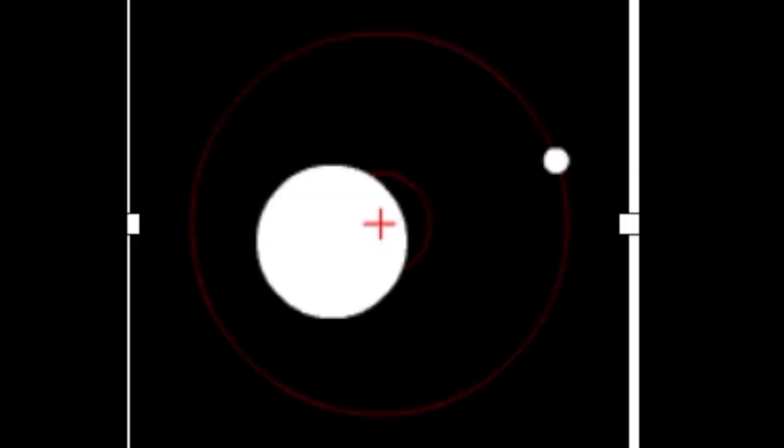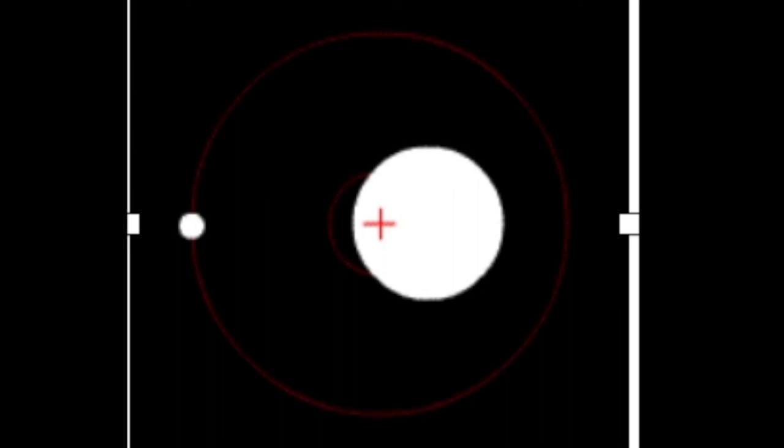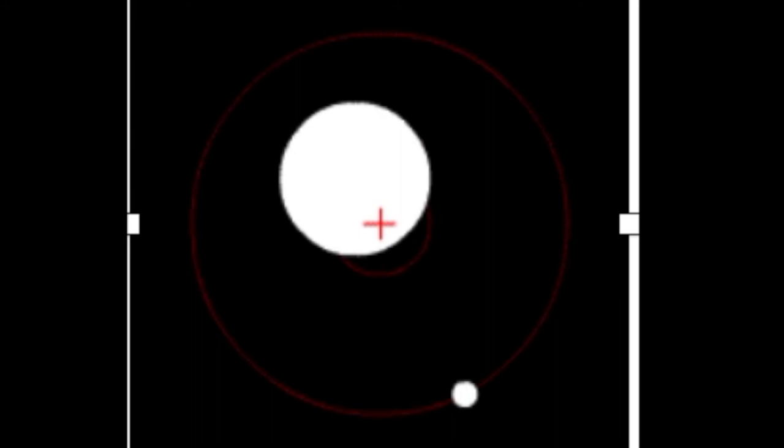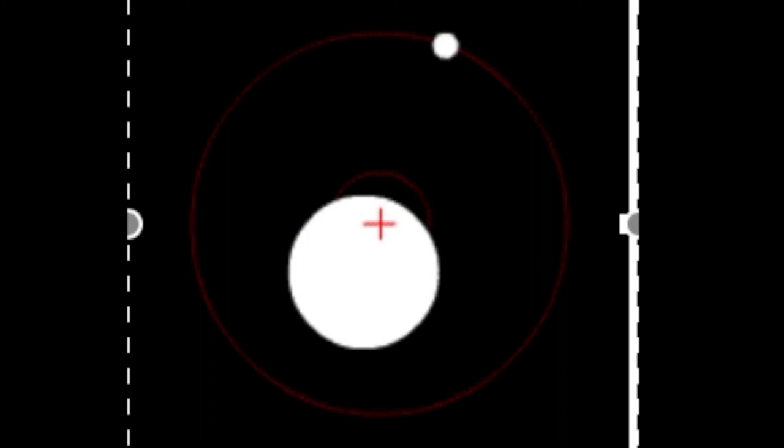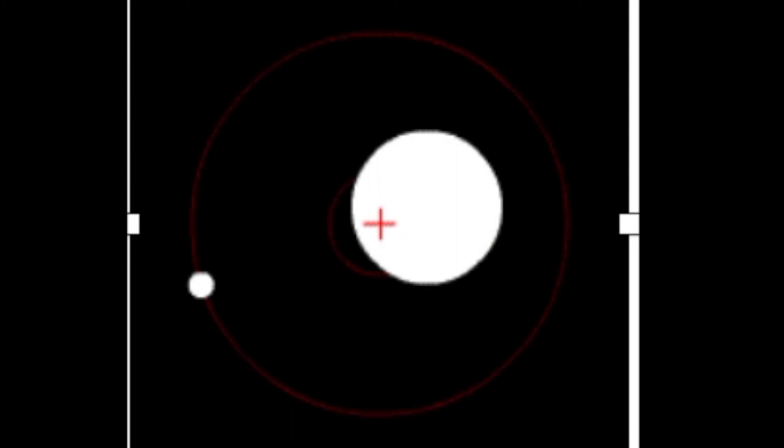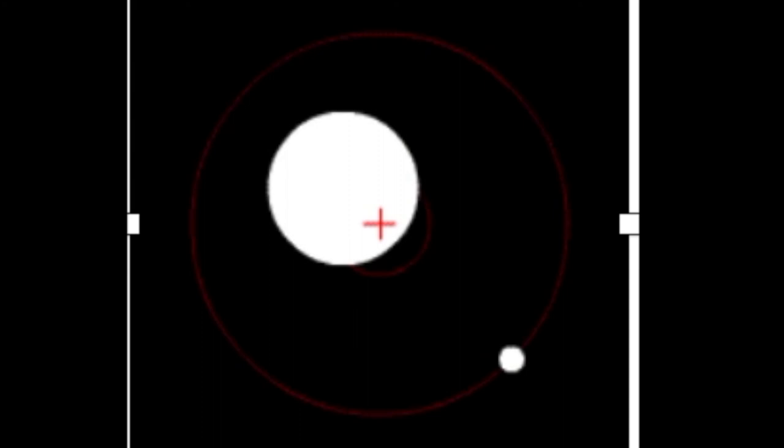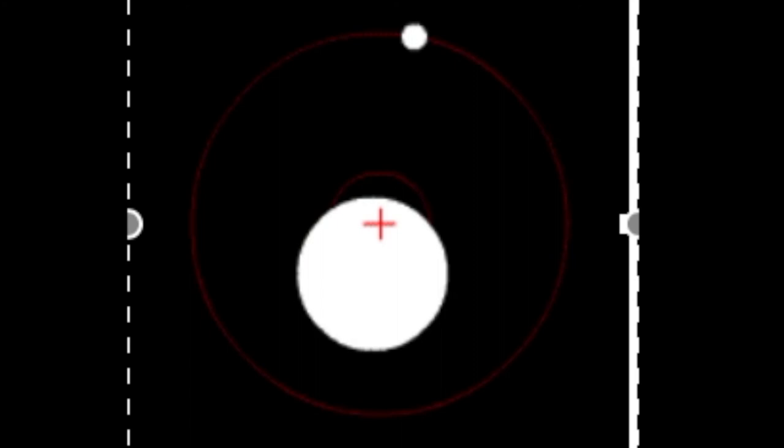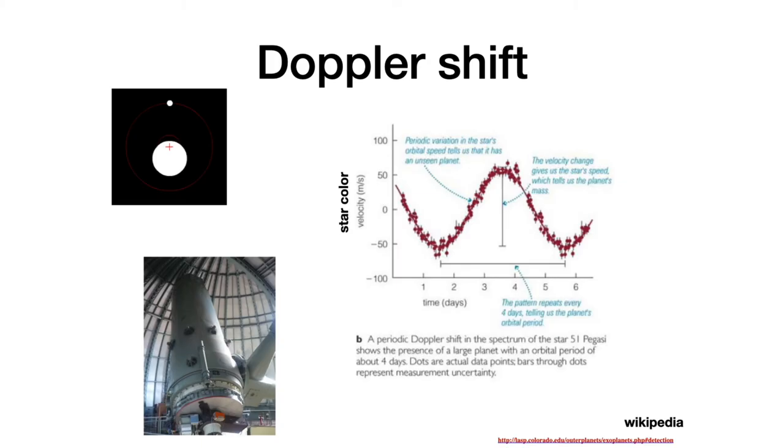Now, how do we use the Doppler effect to detect extrasolar planets? Suppose we have a pretty massive planet orbiting a star. The star being the larger object, and the planet being the smaller object. The star doesn't remain fixed. In fact, the system of the two objects orbits around the center of mass, which means that as we observe the star, sometimes it's moving towards us, and sometimes it's moving away from us. And therefore, the light from the star will be Doppler shifted, sometimes towards the blue when the star is coming towards us, and sometimes towards the red when the star is moving away from us.